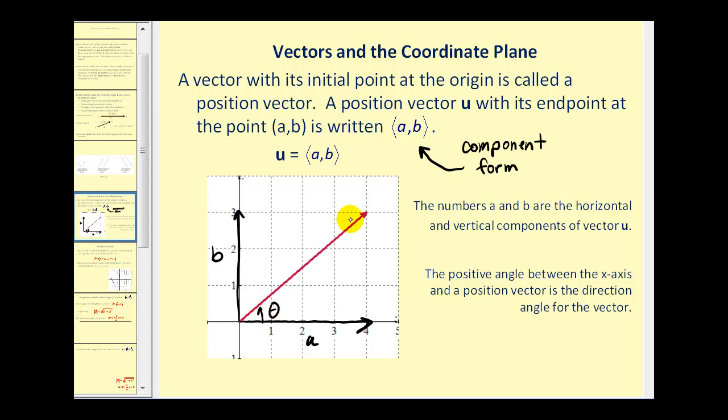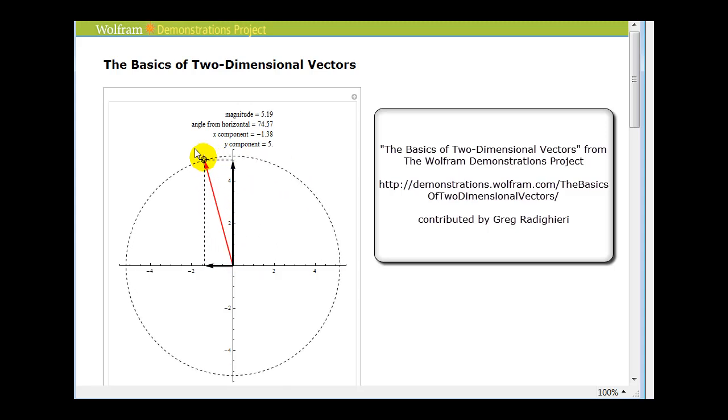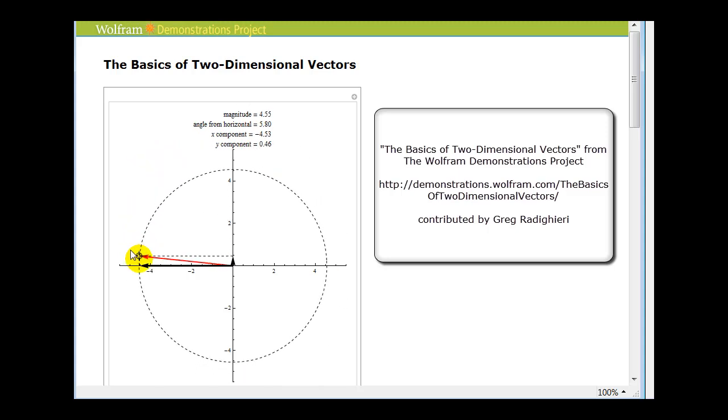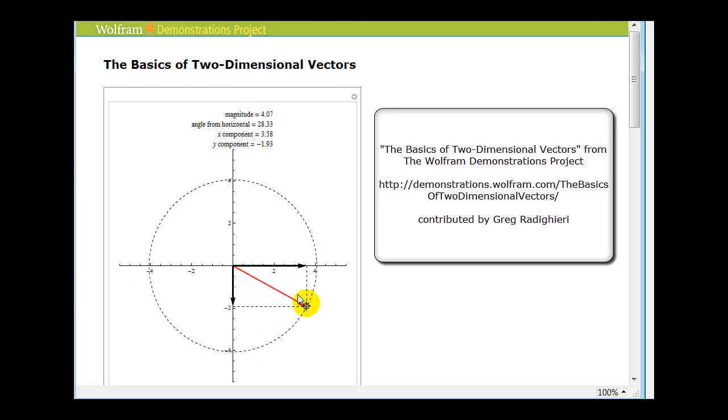Let's take a look at this another way. Here we see a vector in red with its horizontal and vertical components in black. As we change the vector, the horizontal and vertical components also change. This would be theta here, and the length of this red vector would be its magnitude.